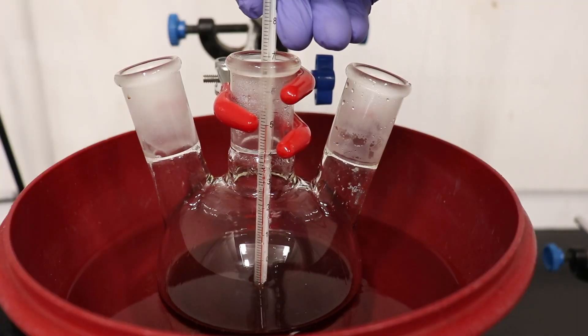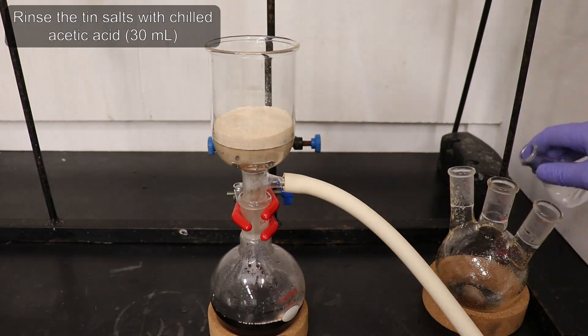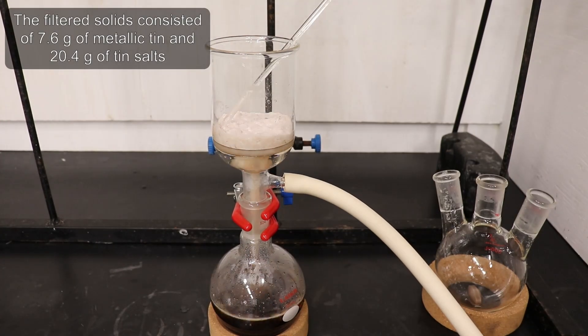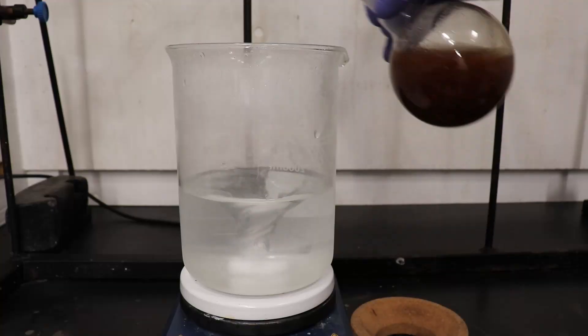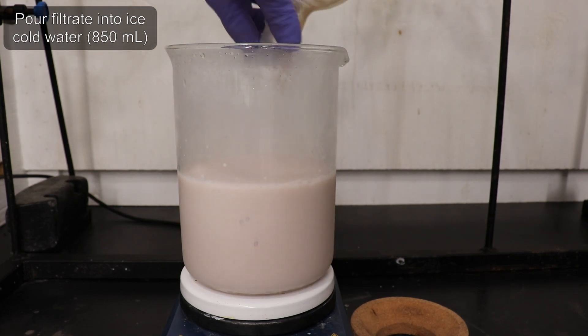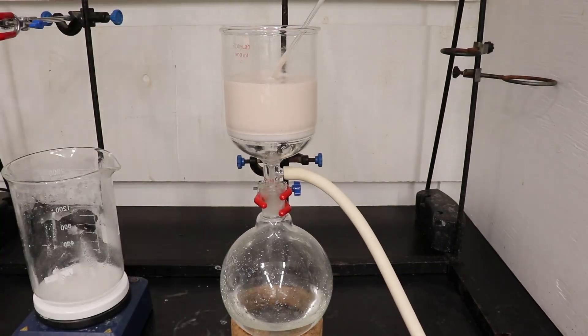Once the mixture hit 50 degrees Celsius, I filtered it using a vacuum aspirator, then washed the precipitate with 30 mL of cold glacial acetic acid. The product was then crashed out from the filtrate by pouring it into 850 mL of ice cold water.